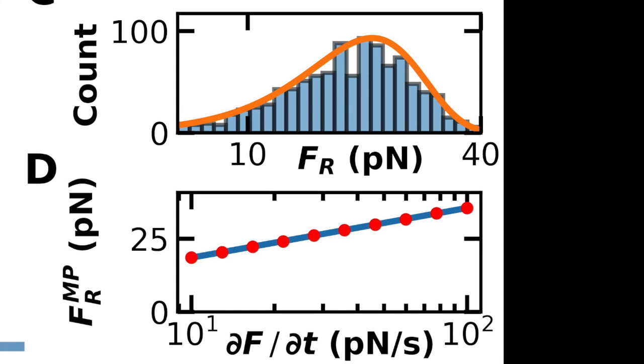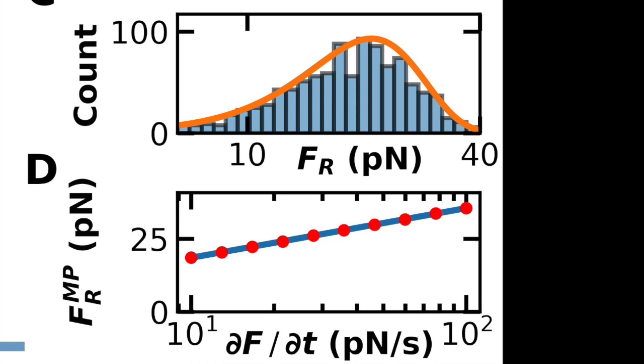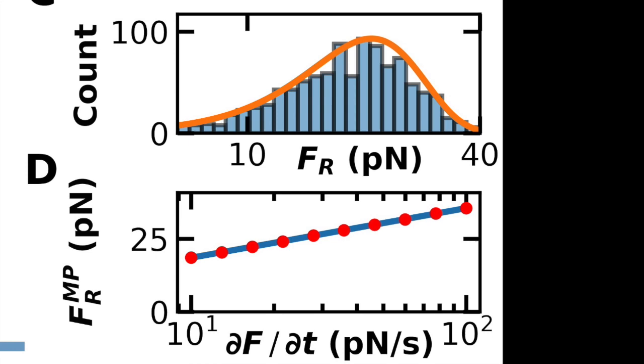So we can see here in the top we have many rupture forces, or the force at the event location, and at the bottom we can plot the most probable rupture force as a function of the local slope right before those events, or the loading rate. And it turns out by fitting models, such as the Bell-Evans model, to this type of data, we can get energy landscape parameters.